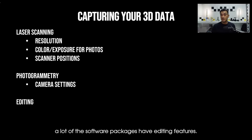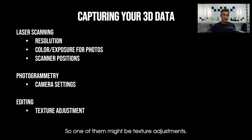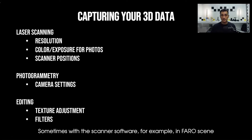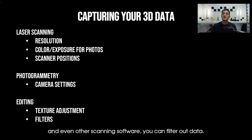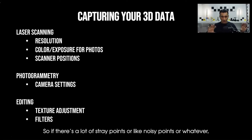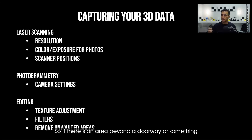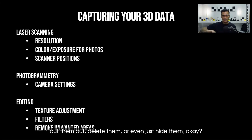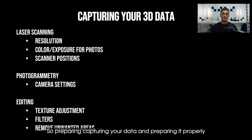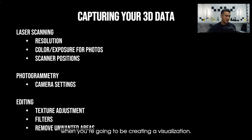In both laser scanning and photogrammetry, a lot of software packages have editing features. One of them might be texture adjustments, where you can play with sliders, especially in photogrammetry packages. With scanner software — for example in Faro Scene and other scanning software — you can filter out data, so if there are stray or noisy points there are ways to filter these out, including removing unwanted areas. If there's an area beyond a doorway you don't want, you can crop, cut, delete, or hide it. Preparing and capturing your data properly is really important when creating a visualization.